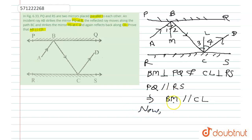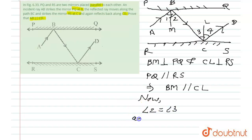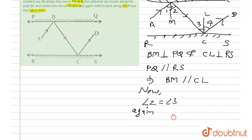Now we will check the alternate angles. We can say that angle 2 and angle 3 are alternate angles and are equal, since BM and CL are parallel lines. Therefore, angle 2 is equal to angle 3.